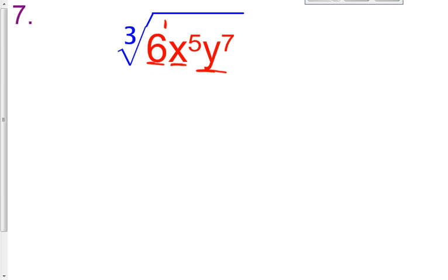the x to the 5th, and y to the 7th. So our answer in rational form is 6 raised to the 1 third, x raised to the 5 thirds, y raised to the 7 thirds. The exponents are all in the numerator; that index of 3 is in the denominator.